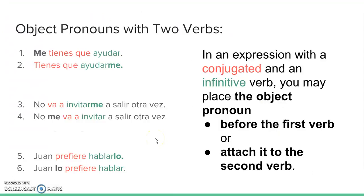Now we're going to talk about object pronouns with two verbs. The rule is: in an expression with a conjugated verb and an infinitive verb, you may place the object pronoun in two different places. You can put it before the first verb or attach it to the second verb. If there's one verb there's one rule, but with two verbs you have two options.